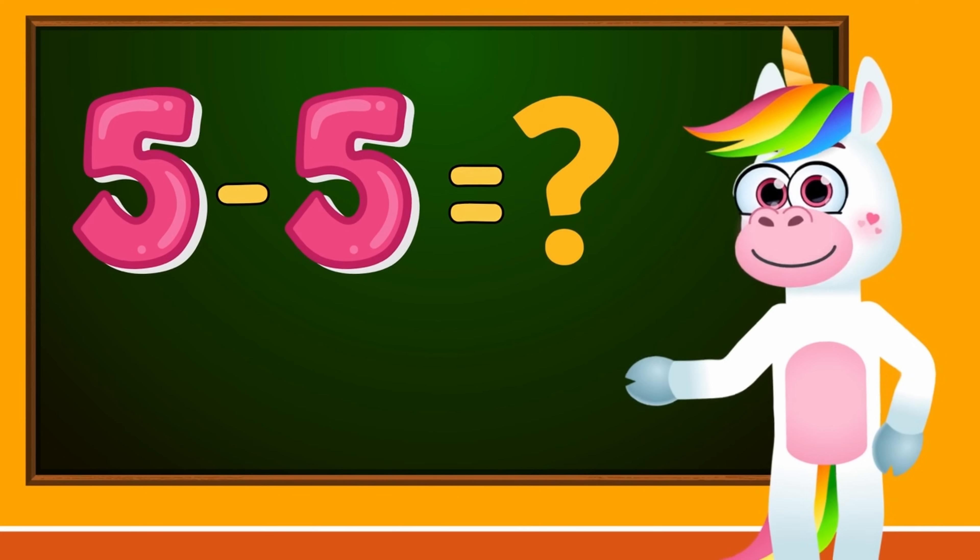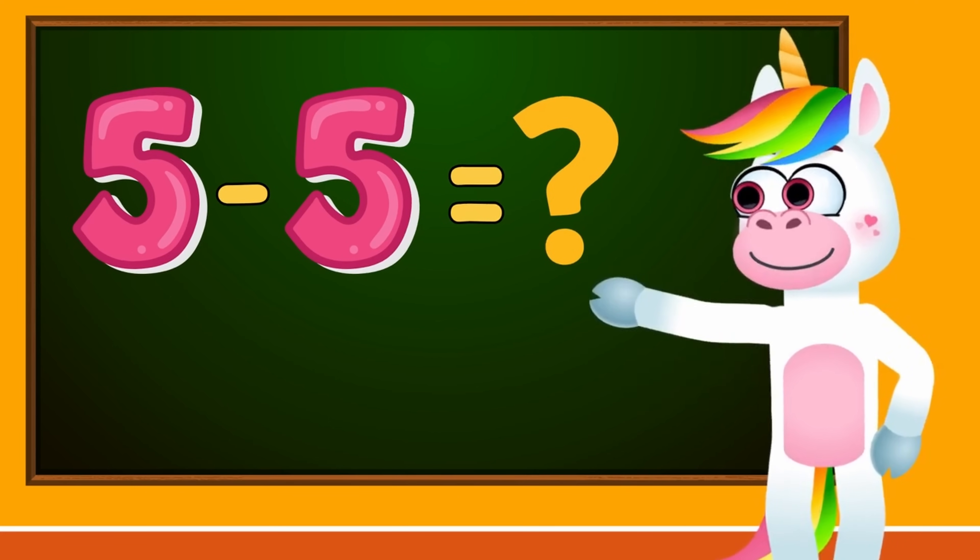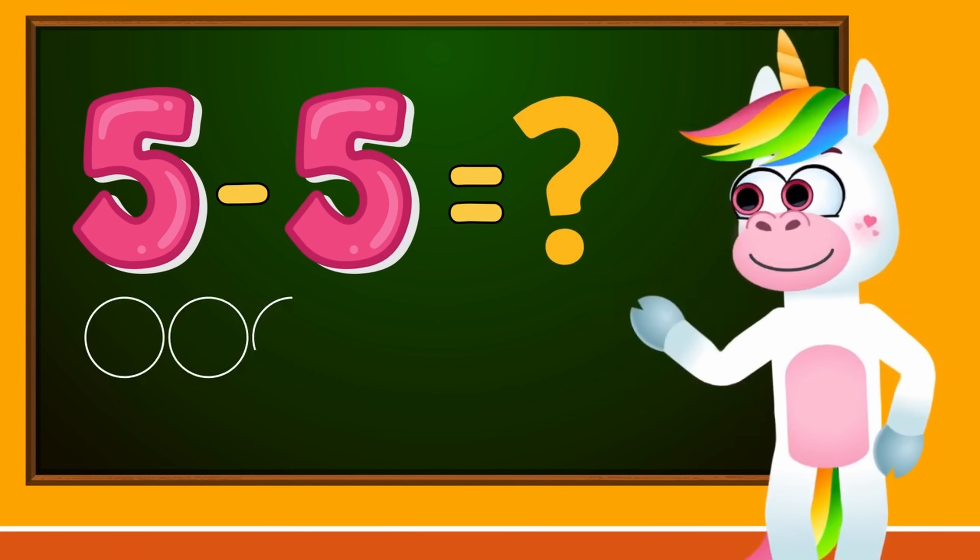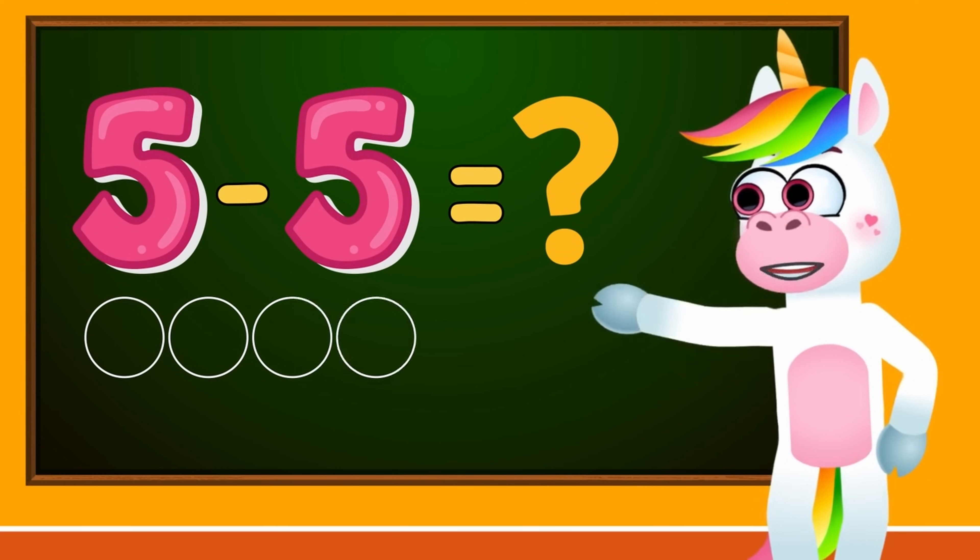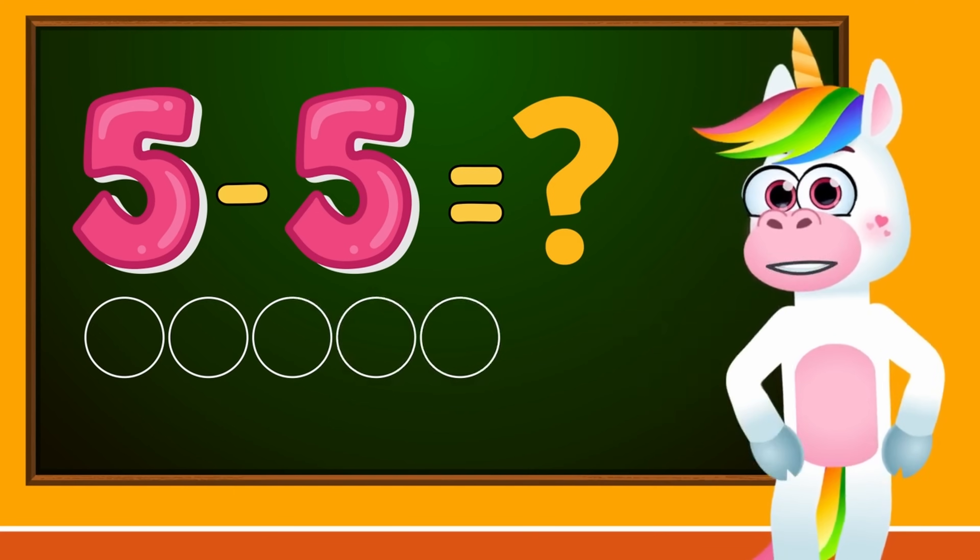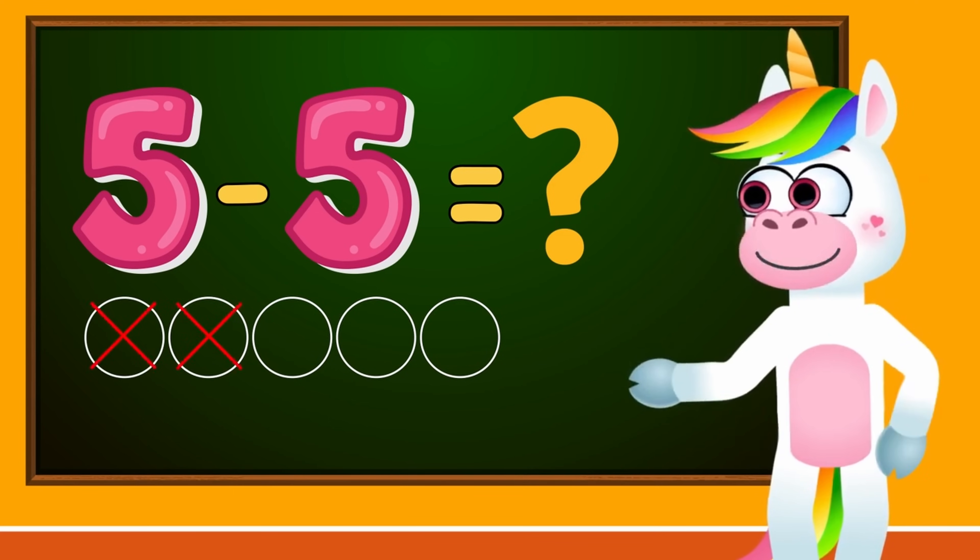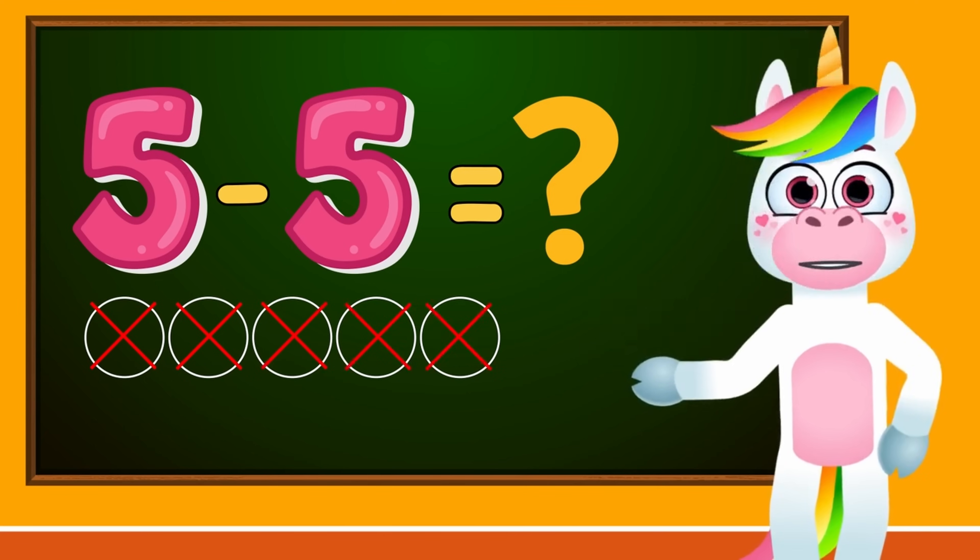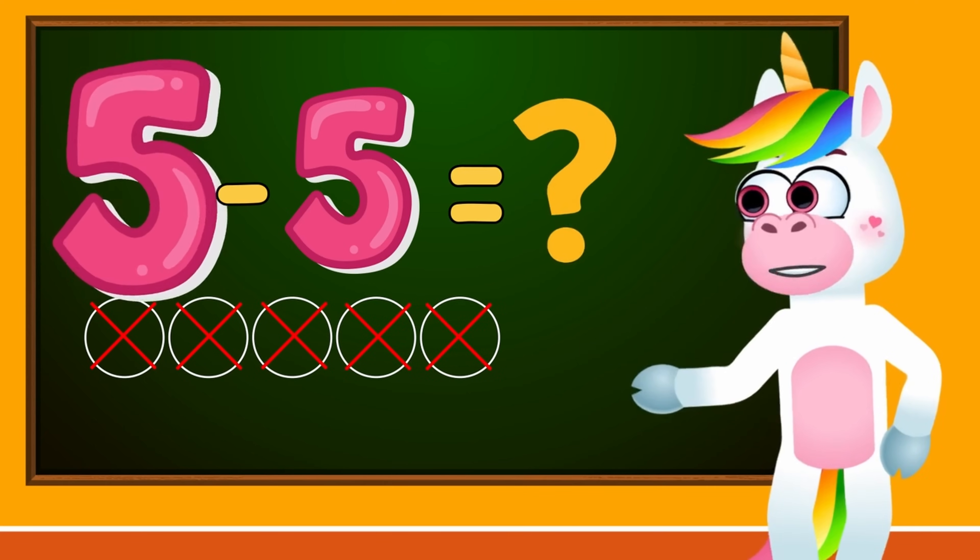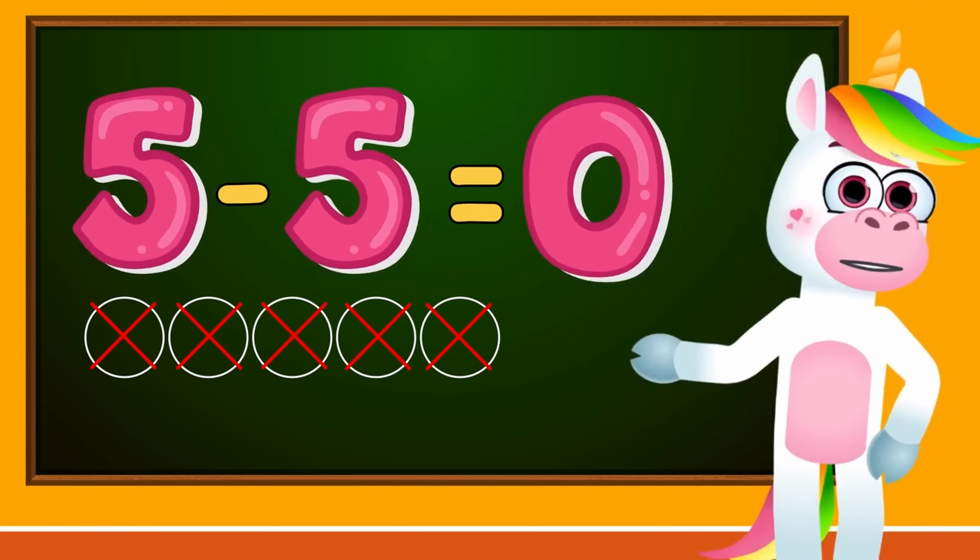Let's calculate what the correct result is in the operation 5 minus 5. So we'll draw 5 circles. 1, 2, 3, 4, 5. And we have to subtract or otherwise cross out 5 circles. 1, 2, 3, 4, 5. No circles are left, so 5 minus 5 equals 0.